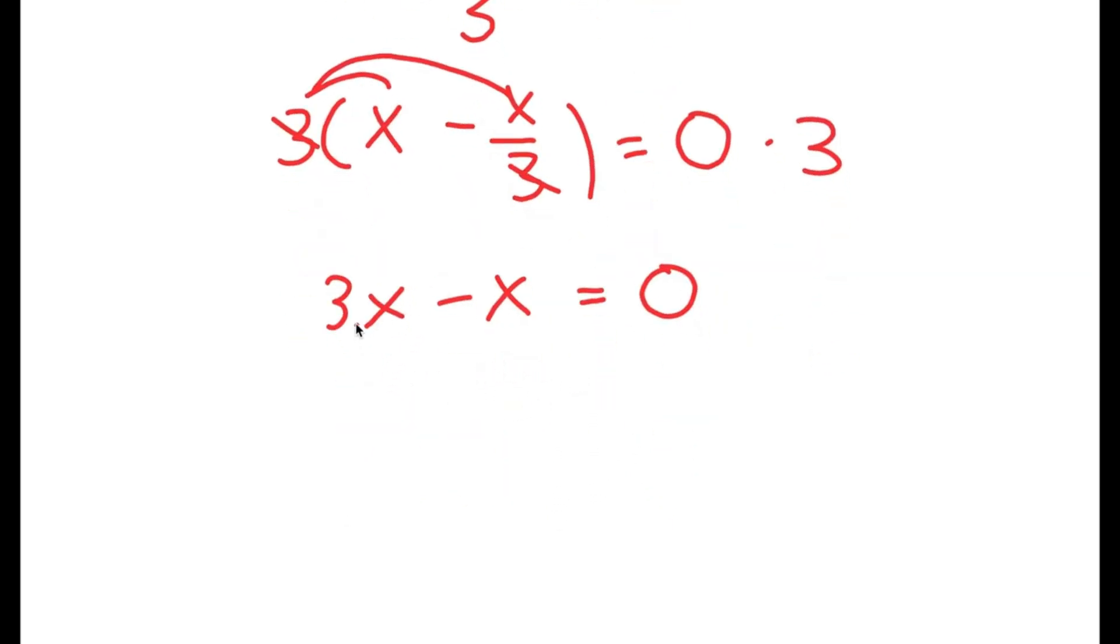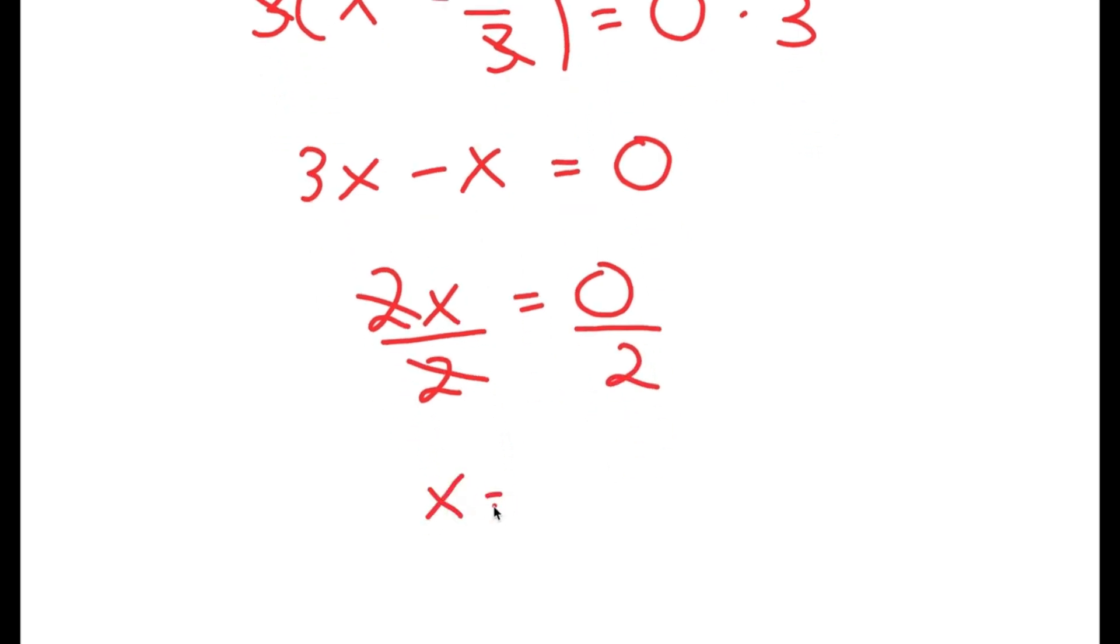Now, from here, 3x minus x is 2x. So I get 2x is equal to 0. And now if I divide both sides by 2, these two cancel out, and I get x is equal to 0 divided by 2, which is 0.